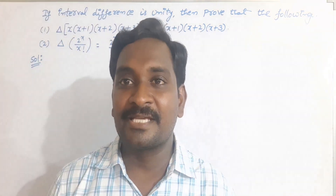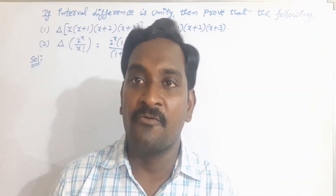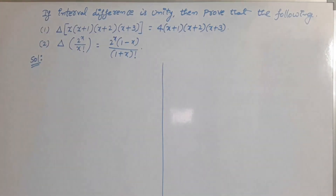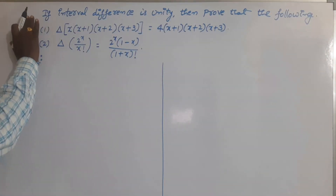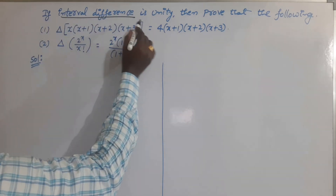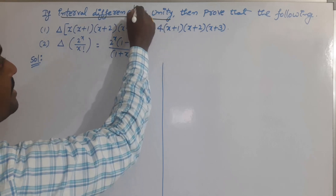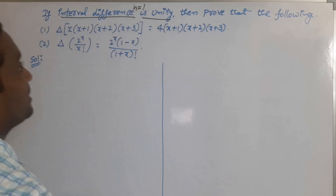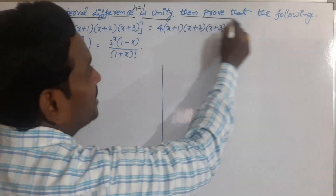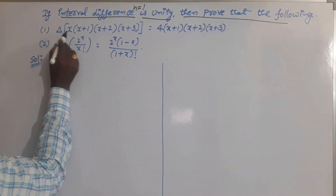Hi everyone, welcome back to our channel. In this video I will give some more problems on forward difference operators. This is the statement of the problem: the interval difference H is unity, meaning H is given as 1.